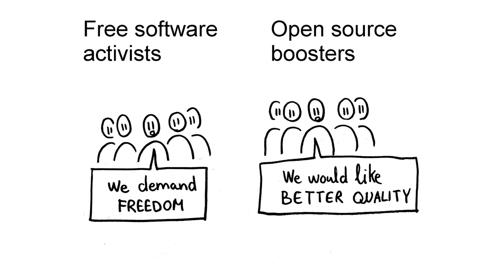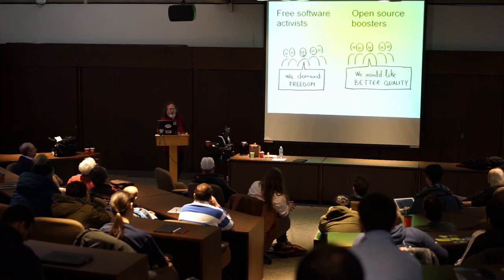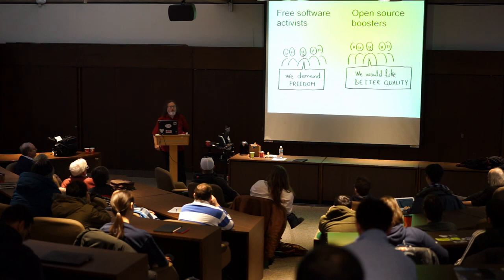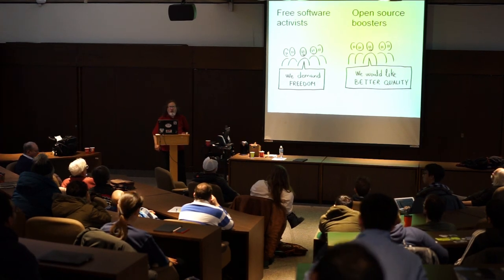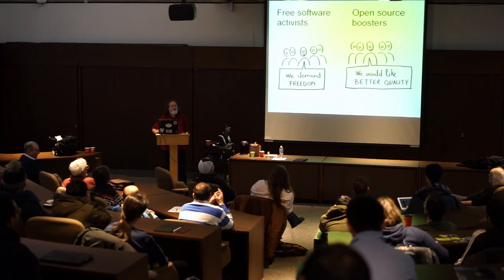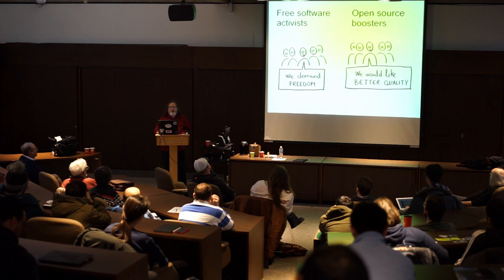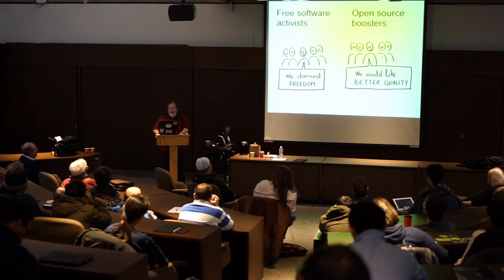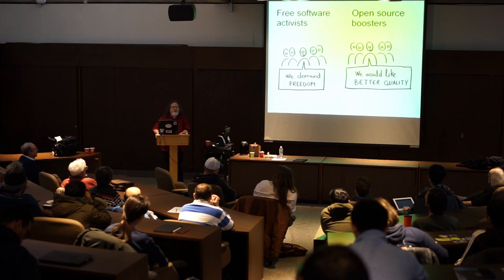One obstacle to freedom is the term 'open source.' You've probably heard it used — it stands for rejection of the free software movement. That term was coined in 1998 by people who liked free programs but disagreed with our moral and political position on non-free software. They wanted to talk about the same programs without alluding in any way to freedom, justice, injustice, right, or wrong. With their term 'open source,' they could present the issue solely in terms of practical advantage and never raise any issues of right and wrong.